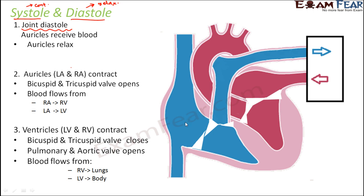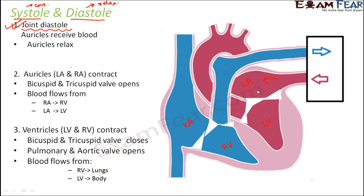When they are in the relaxed state, we have the right auricle, left auricle, right ventricle, and left ventricle. In the first step, both auricles will receive blood: the right auricle will receive deoxygenated blood from various parts of the body, and the left auricle will receive oxygenated blood from the lungs.